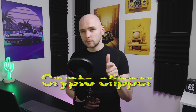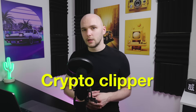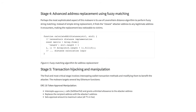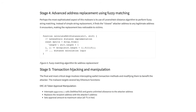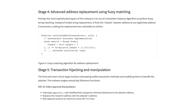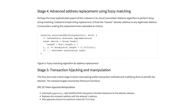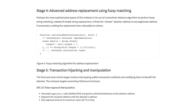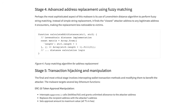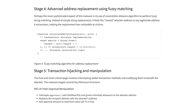The malware injected into them was a crypto clipper. It intercepts Web3 or crypto transactions in the browser and silently swaps wallet addresses, redirecting funds to attacker-controlled accounts without triggering obvious alarms.